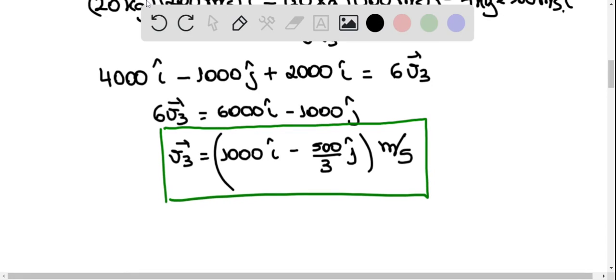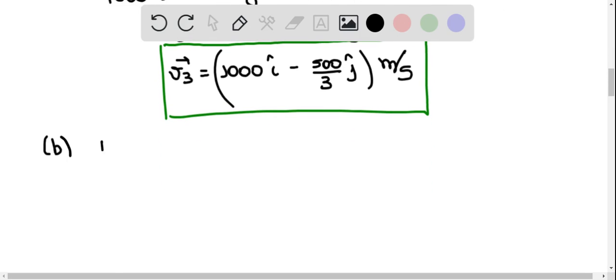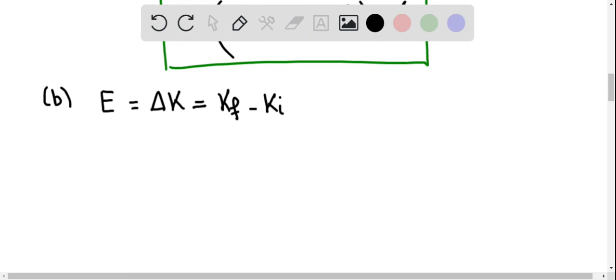And in question b, we have to calculate how much energy was released in the explosion. And that energy is equal to the difference in kinetic energy of the particles of the system. So it's the final kinetic energy minus the initial kinetic energy. This is the energy that was released, because this is the number by which the energy increased after the explosion.